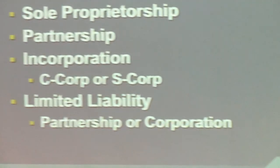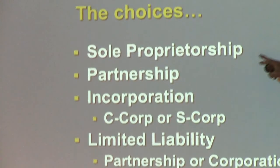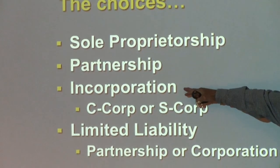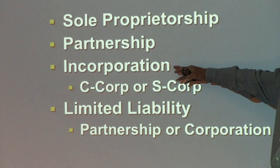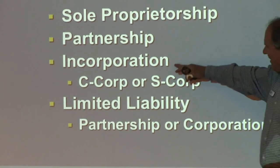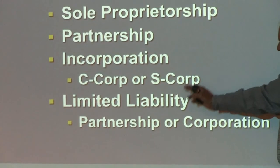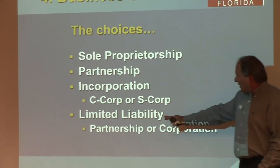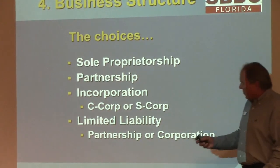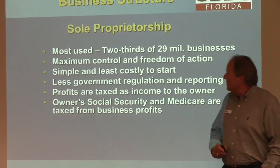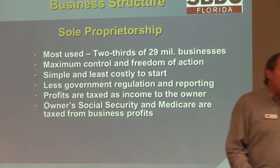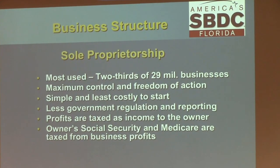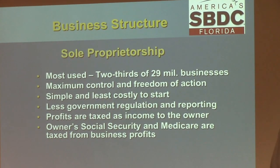Business structures — your different choices are sole proprietorship, partnership, corporation (you may hear C-Corp, S-Corp), and limited liability companies or limited liability partnerships. The sole proprietorship is the most popular — you are the business. It's the easiest to set up, and most small companies are sole proprietorships.